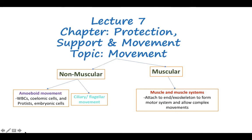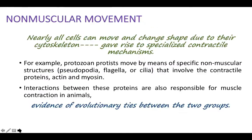Non-muscular movements are present in various kinds of organisms. Nearly all kinds of cells can move and change their shape due to their cytoskeleton. The cytoskeleton consists of intermediate elements like actin and myosin. The cytoskeleton helps cells to move, and cell movements occur during cell division. The cytoskeleton also gives rise to specialized contractile mechanisms.